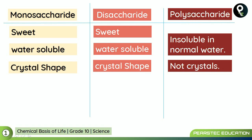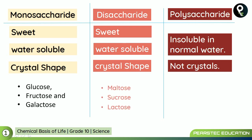Glucose, fructose, and galactose are monosaccharides. Disaccharides are formed by joining two monosaccharides: glucose and glucose come together to form maltose, glucose and fructose form sucrose, and glucose and galactose form lactose. In each of the above reactions, water is also released.